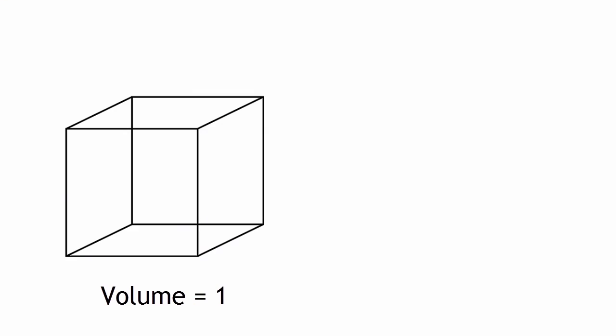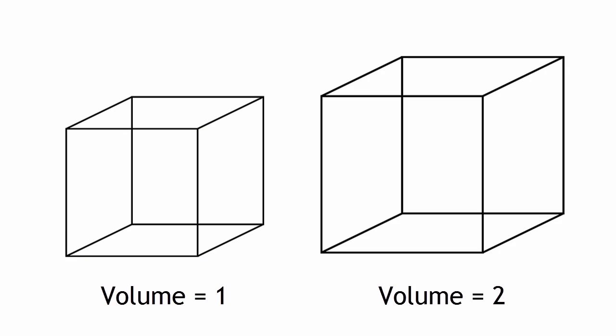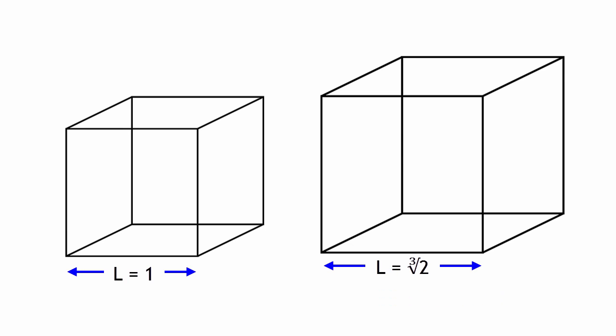The second problem is to double a cube. If you have a cube whose volume is one, you have to construct another cube which has double the volume, or a volume of two. If the first cube has sides equal to one, then the second cube needs to have sides equal to the cube root of two, so that the volumes of these two are doubles of each other.